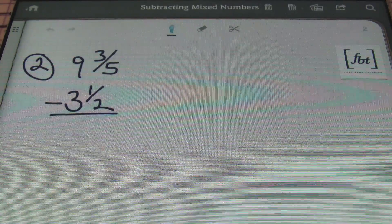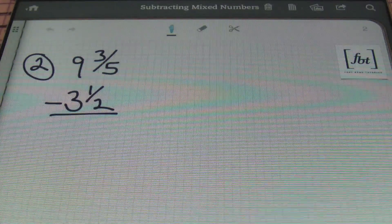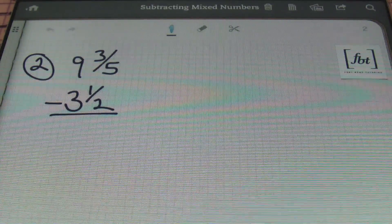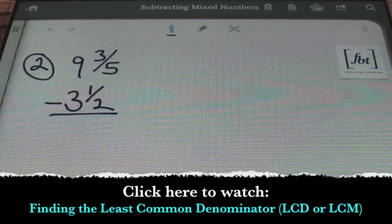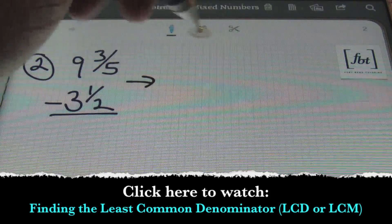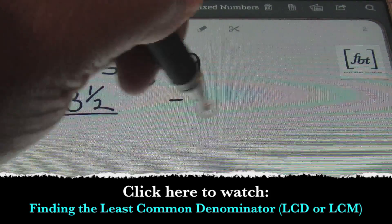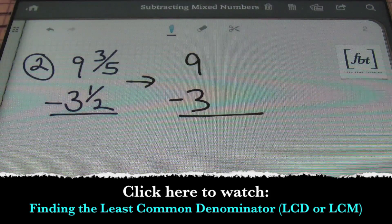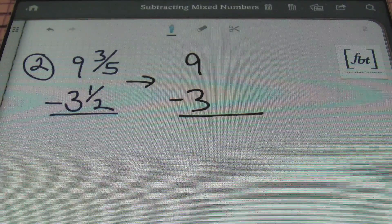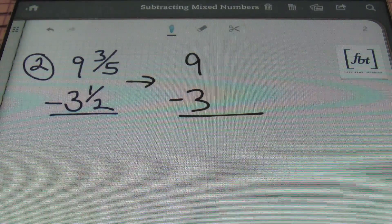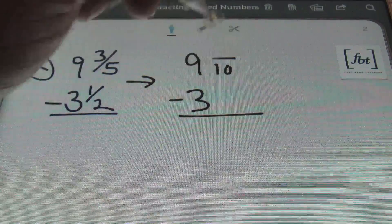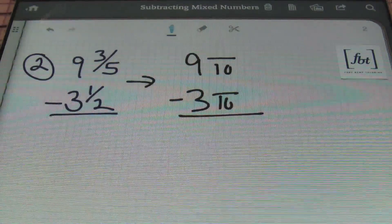In problem number 2, we have 9 and 3 fifths minus 3 and a half. The first thing you need to have is a common denominator. So what I'll be doing here is I'll be rewriting this, setting up my framework again with my whole numbers, and making sure that my denominators are the first number that 5 and 2 can go into evenly, which is 10. So I have my denominators rewritten as 10 now.